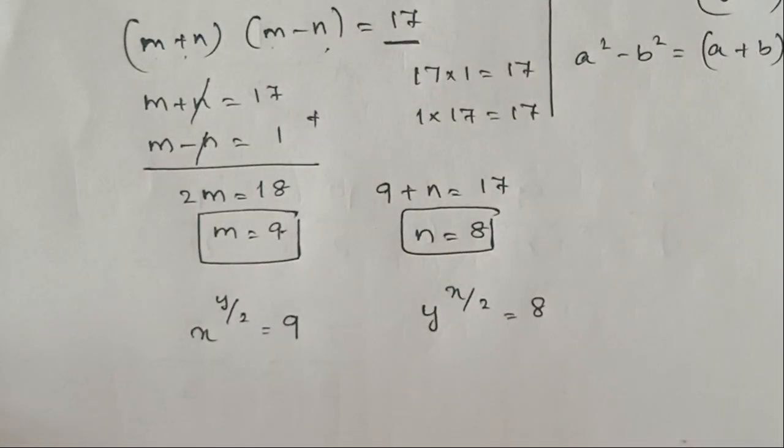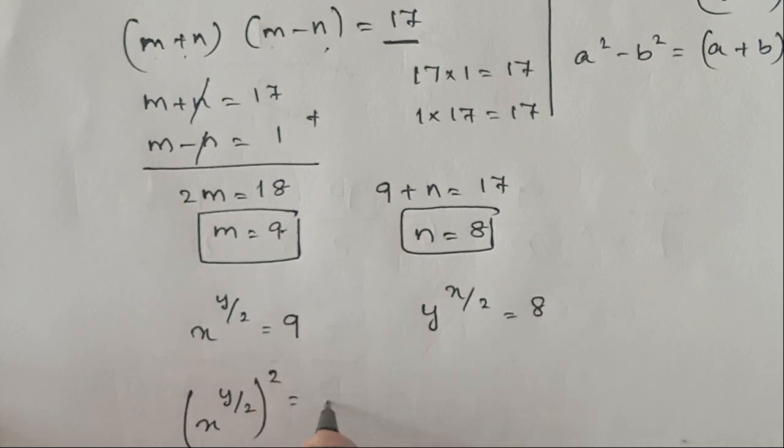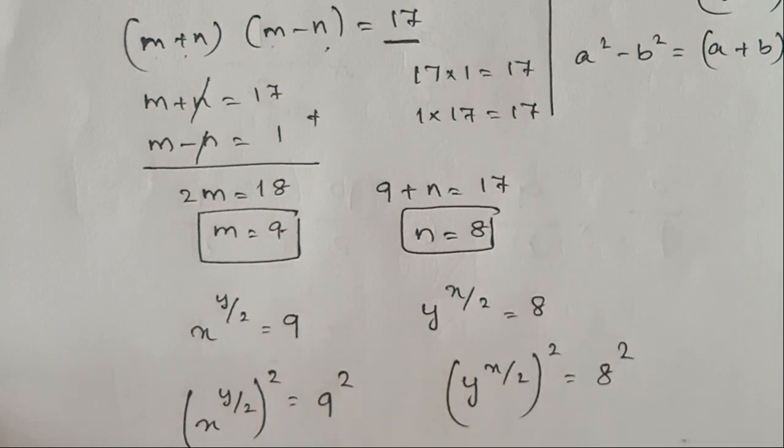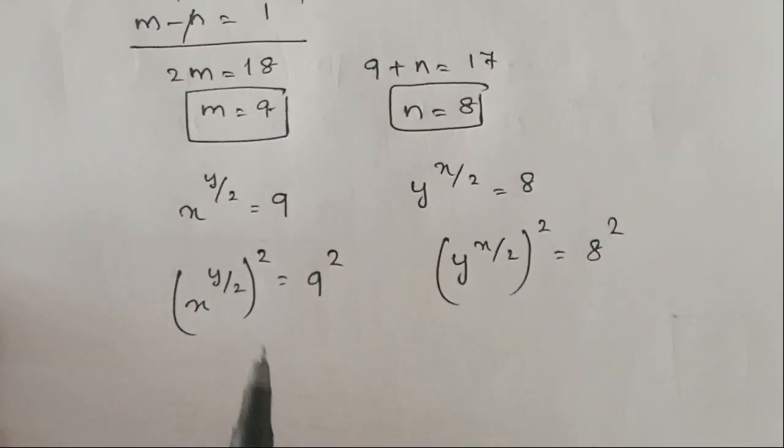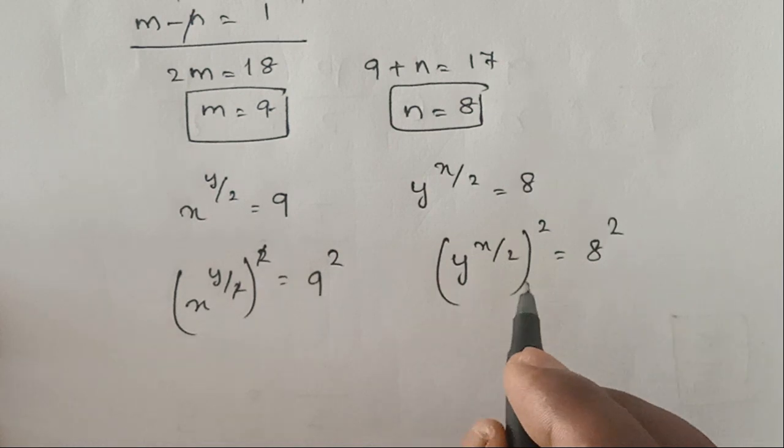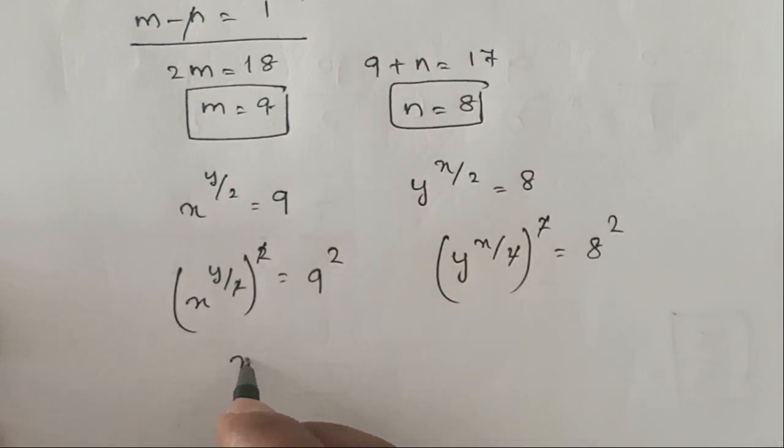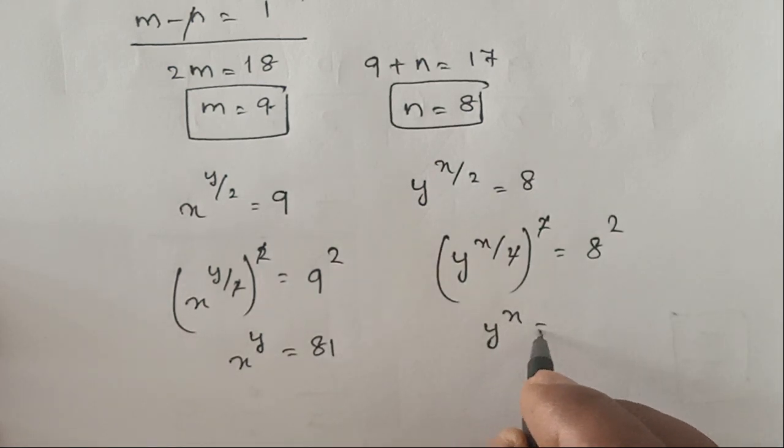Now, take square on both sides. So (x^(y/2))^2 equals 9^2, and (y^(x/2))^2 equals 8^2. This 2 and 2 will get cancelled. So it means that x^y is equal to 81 and y^x is equal to 64.